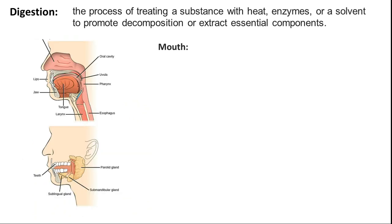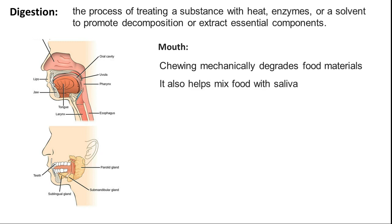The gastrointestinal tract starts from the mouth, then goes to the stomach, small intestine, large intestine, and waste is excreted. At the duodenal junction, there is a connection with the liver, gallbladder, and pancreas. In the mouth, chewing is the main mechanical activity that degrades food into smaller parts and mixes it with saliva. Saliva contains enzymes — amylase and lipase — both of which perform hydrolysis reactions.